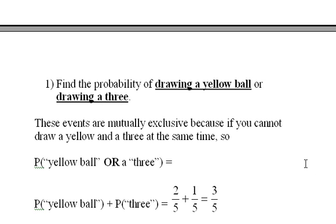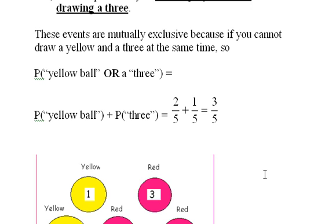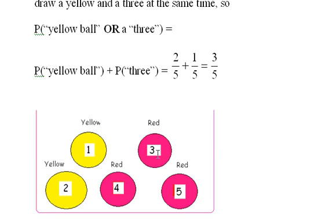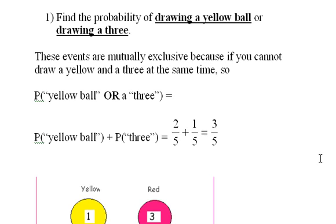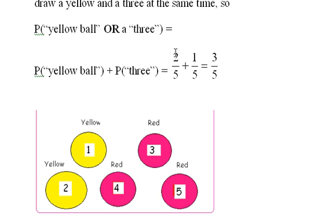Find the probability of drawing a yellow ball or drawing a 3. If you draw a 3, it excludes the possibility of having a yellow ball, and vice versa. So these events are mutually exclusive, and we only need the sum of the two probabilities. The probability of drawing a yellow ball or a 3 equals the probability of drawing a yellow ball plus the probability of drawing a 3. There are two yellow balls out of five, so that's two-fifths. There is one 3 among five balls, so that's one-fifth. Adding them gives three-fifths.